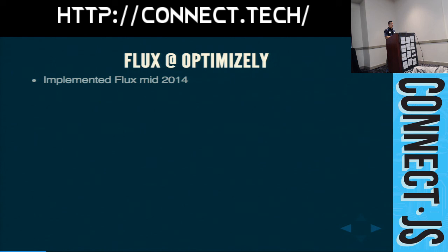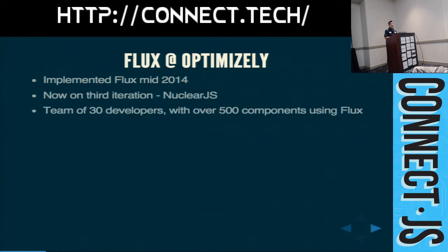Flux architecture at the time was becoming very prevalent, and it fit very well into this idea for a solution. We're currently on our third iteration of our in-house Flux implementation, and we've open sourced it as NuclearJS. At Optimizely, we're a team of about 30 developers that touch the front end codebase. We have over 500 components that use Flux, so scaling in terms of people has been a top priority.